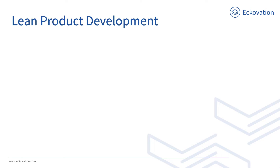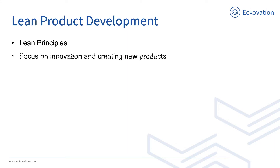Now let's start with the first one: lean product development. Lean product development, or LPD, utilizes lean principles to develop the product. It basically counters the challenges of product development. As lean product development focuses more on innovation and creating new products, there are different core principles placed with differing priority to that of standard lean production. These are called lean thinking principles.